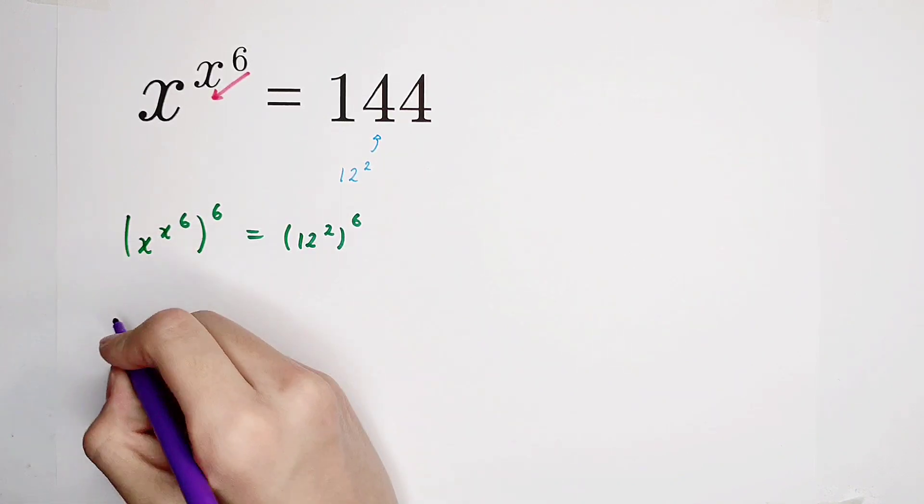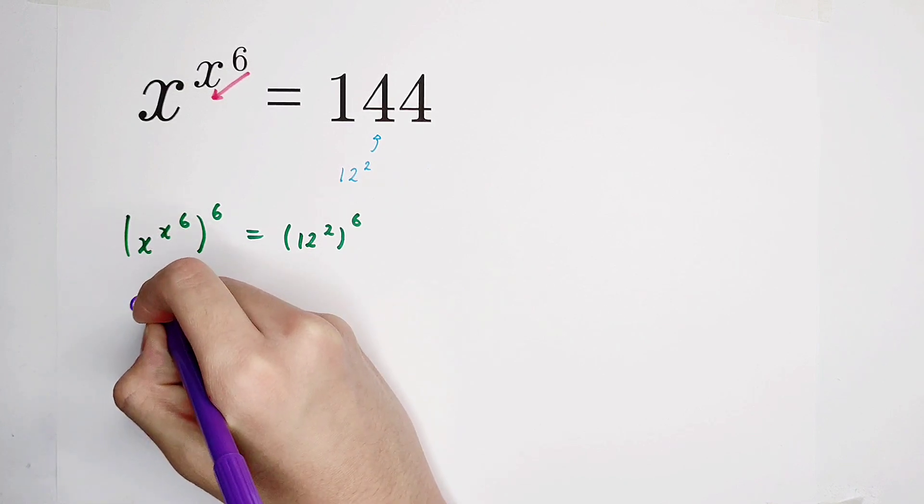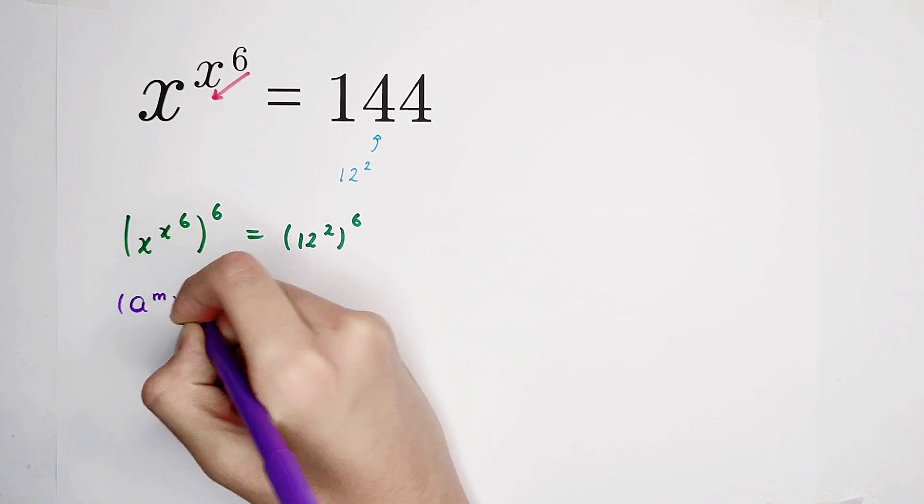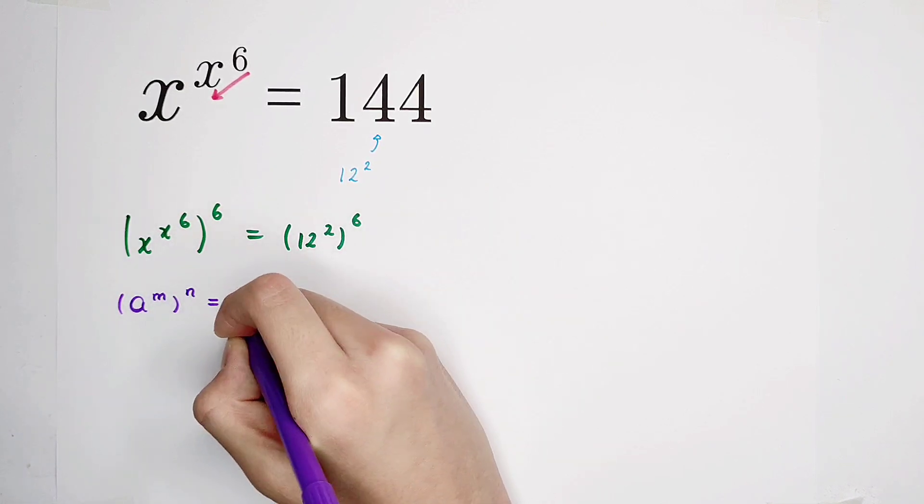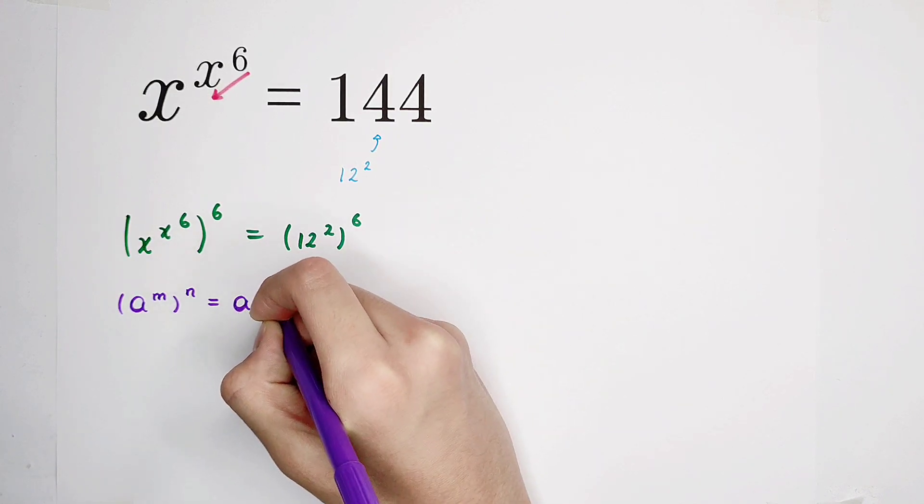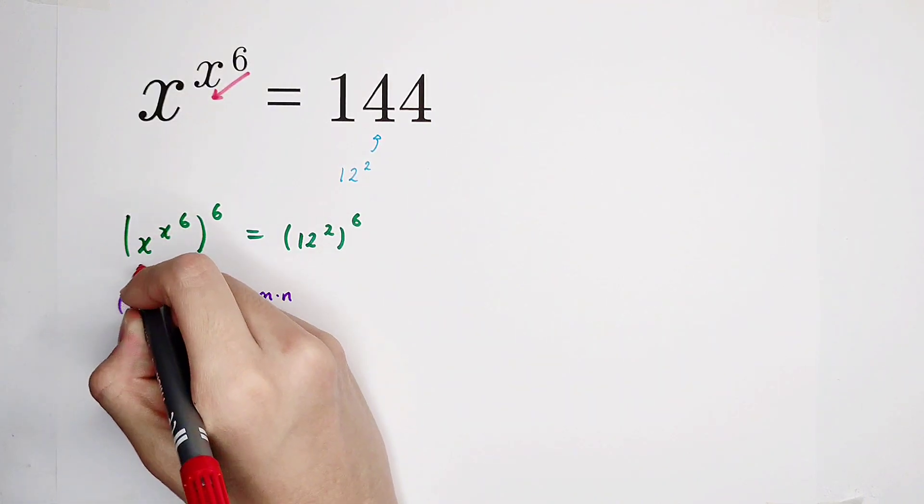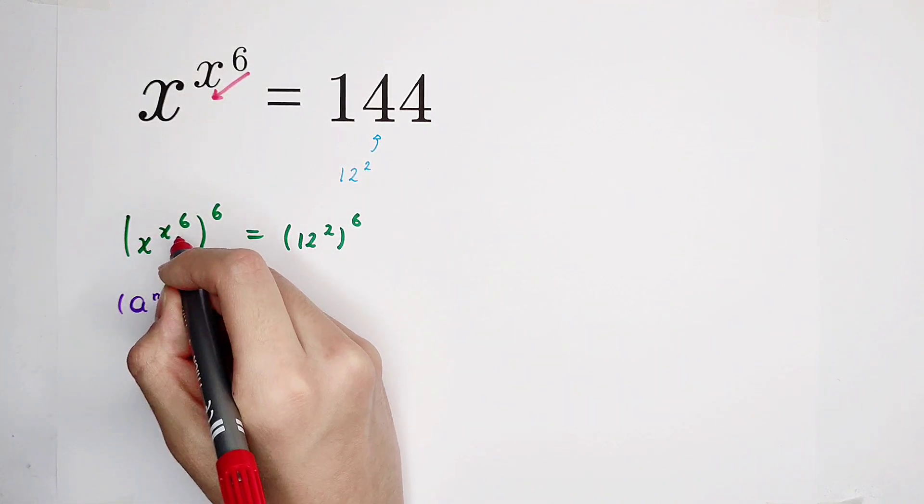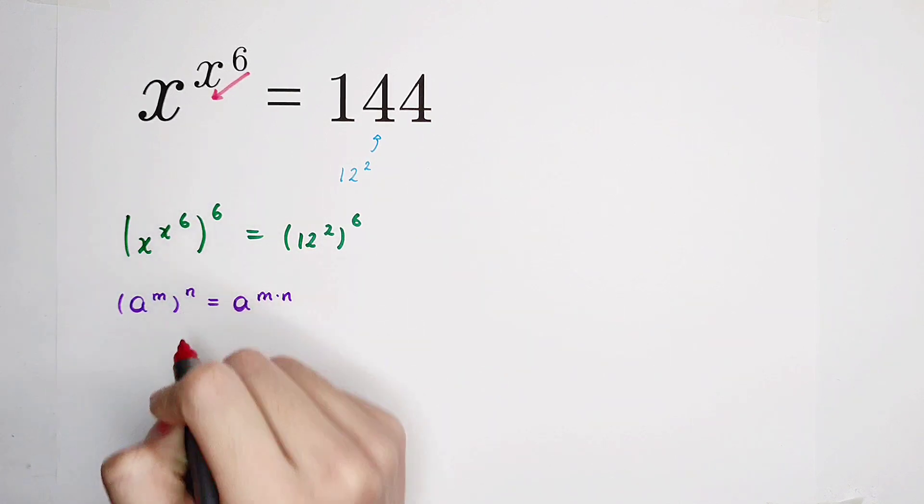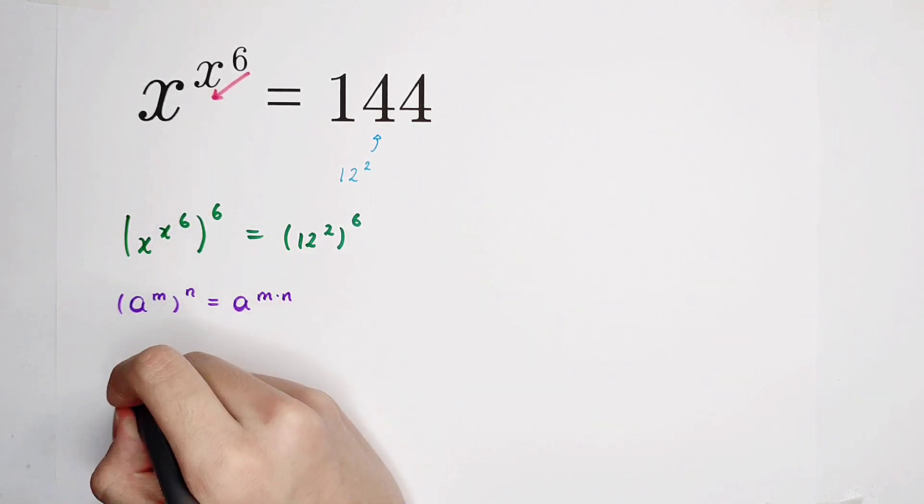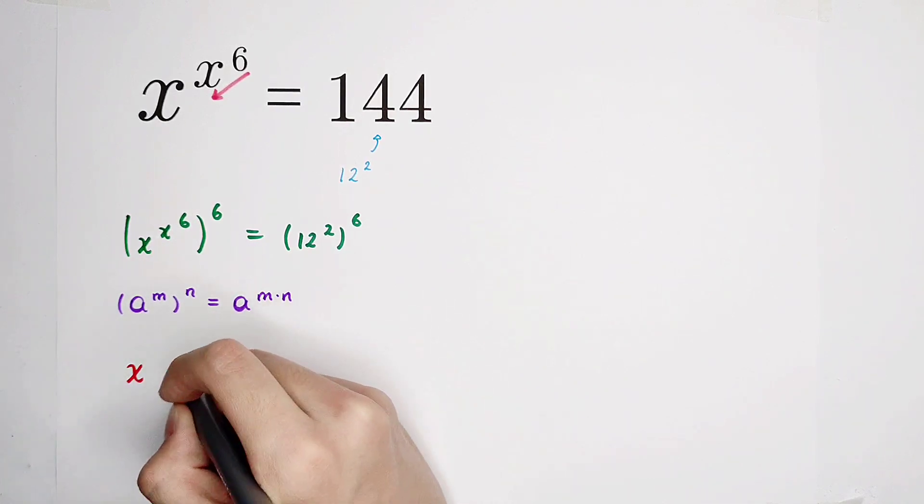Which one? A to the power of m all to the power of n is equal to a to the power of m times n. Then here, x is a, x to the power of 6 is m, and 6 is n. So it is equal to a to the power of m times n.